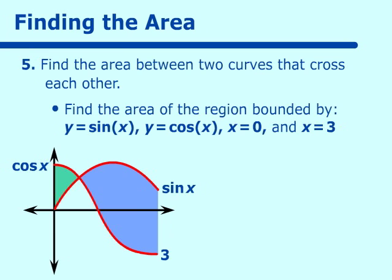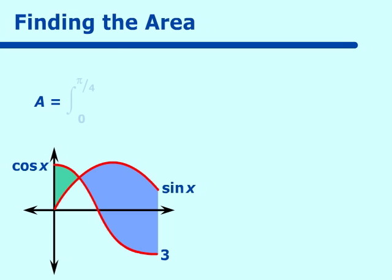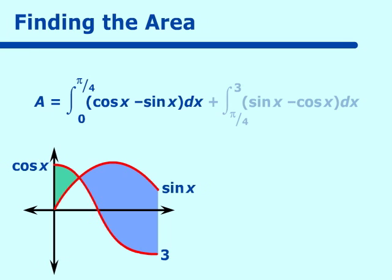So our area would be the integral from 0 to where they intersect, which is pi over 4, of the upper one, which is cosine x minus the lower one, which is sine x, and we're going to dx that. And we're going to add to that from pi over 4 to where the two curves end, which is at 3, and switch the two around. We'll have sine x minus cosine x dx. Integrating those, adding them together, we get the royal sum of 2.677.